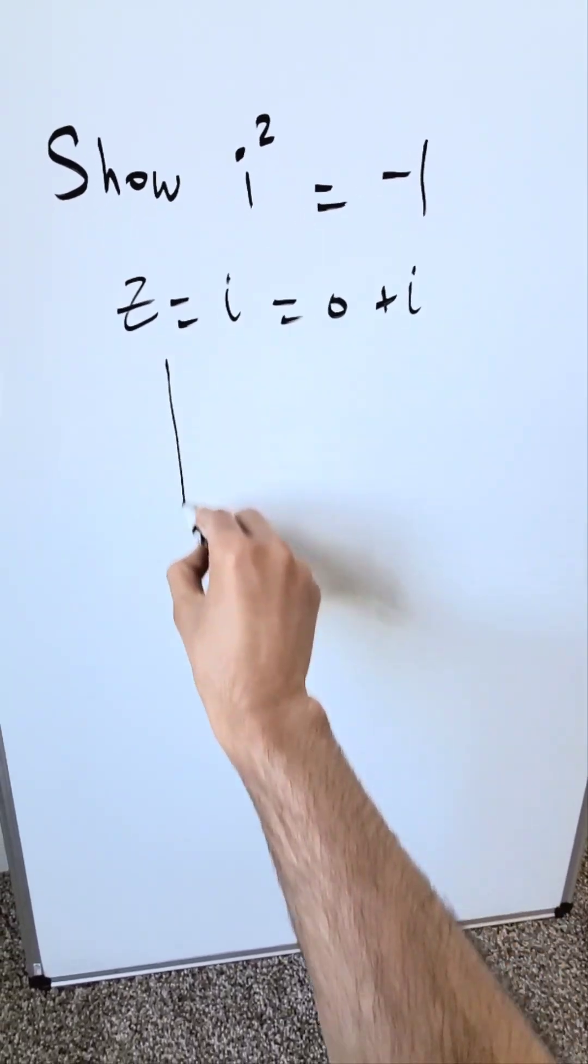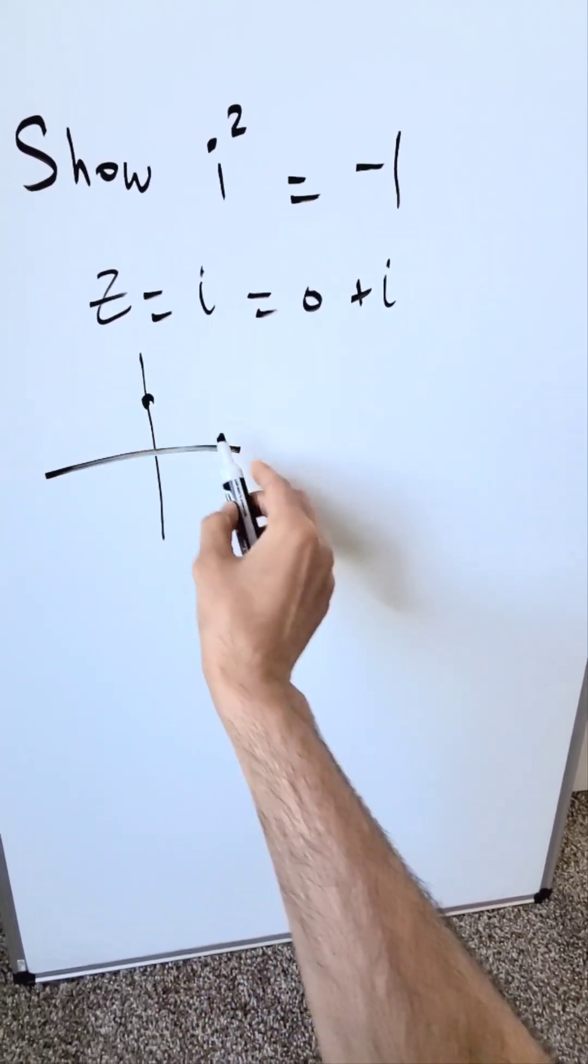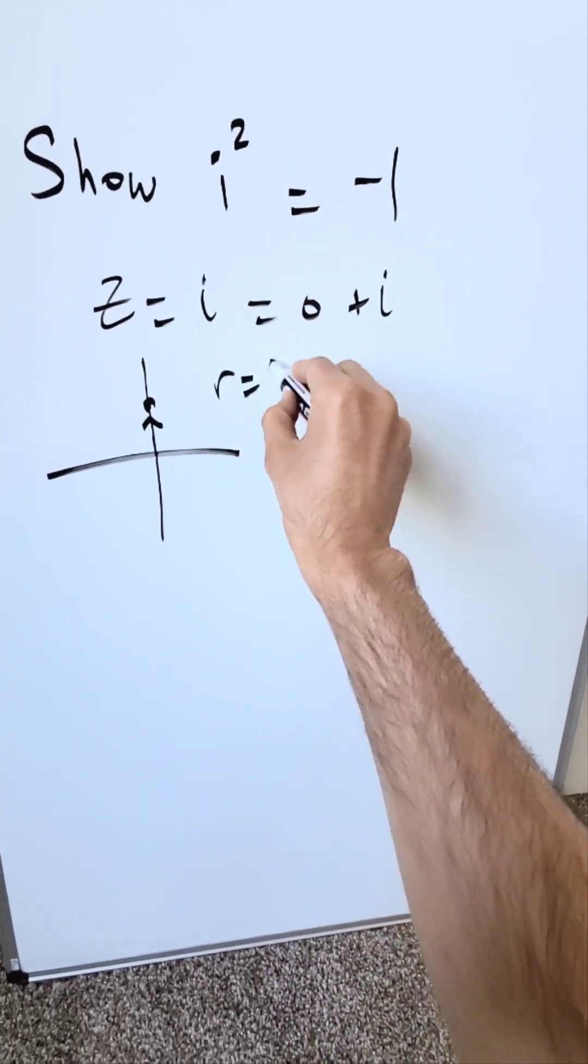This right here is your complex number. If you graph it on a complex plane, it looks right over here. Your real axis, your imaginary axis, you're looking at a distance from the origin to here. Your modulus is equal to 1.